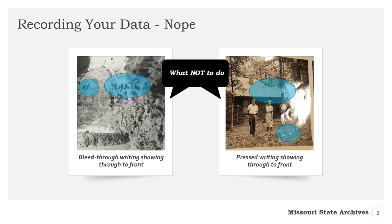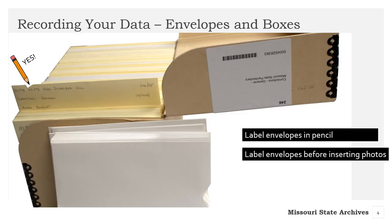There are several solutions available today that can save your photographs from ink damage. First, instead of writing directly on a photograph, we can put our housing skills to use and place each photograph in an individually labeled sleeve. When you label the sleeve, be sure to do so in pencil and write on the envelope before you put the photograph inside. This method is the best way to store your photographs and retain the metadata. However, it is very time intensive, and it reduces ease of access if you do not have an index, which we will talk about soon.